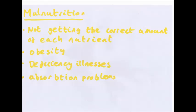Malnutrition is when you don't get the correct amount of each nutrient. This can mean having not enough or too much of a nutrient. Obesity is a form of malnutrition — that's when you get too much of certain nutrients. But you could also have deficiency illnesses, when you're not getting enough of a certain mineral. For example, if you don't have enough iron, you get anaemia.